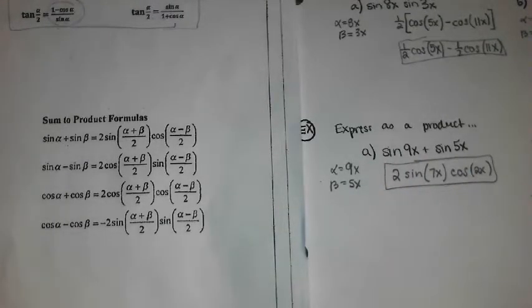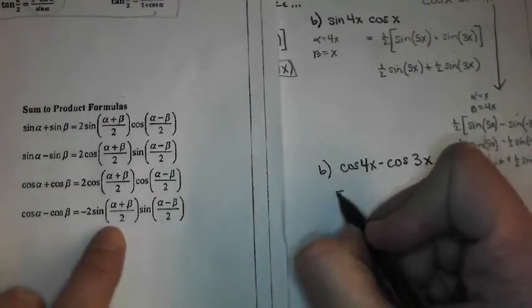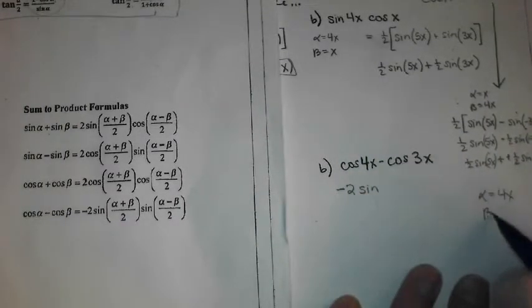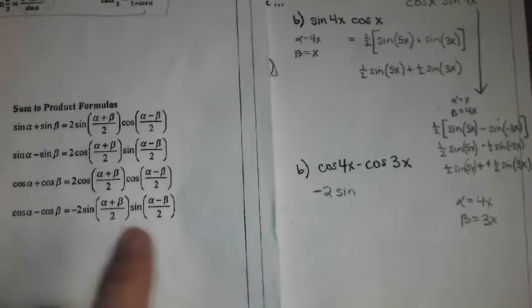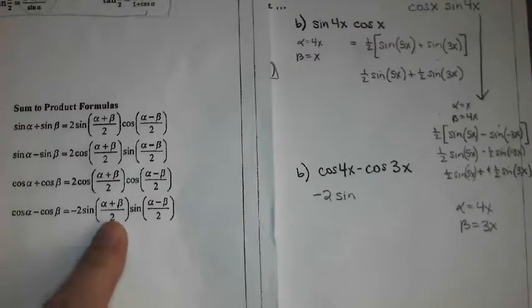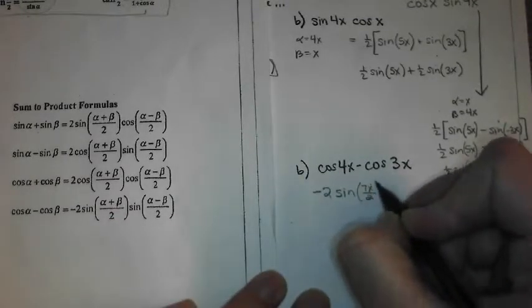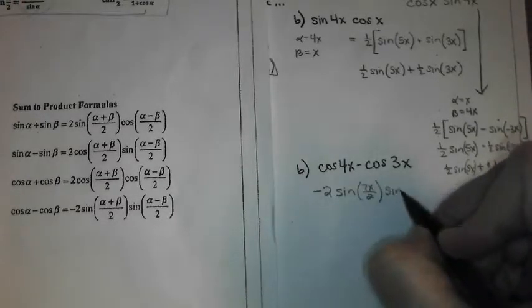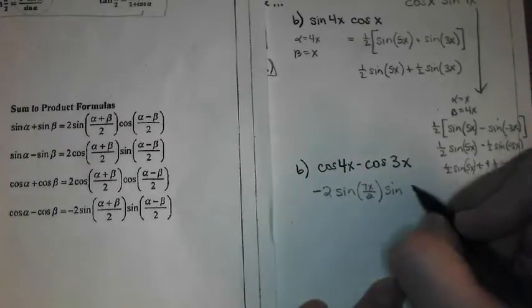Sum to product. And then on B, cosine minus cosine, negative 2 sine. Our alpha is 4x, our beta is 3x. Are we good with that? So it's the sine of alpha plus beta over 2, that's going to be 7x over 2. So just keep that 7x over 2. Stay away from the decimal. Times your sine of alpha minus beta over 2, which will just be x over 2.